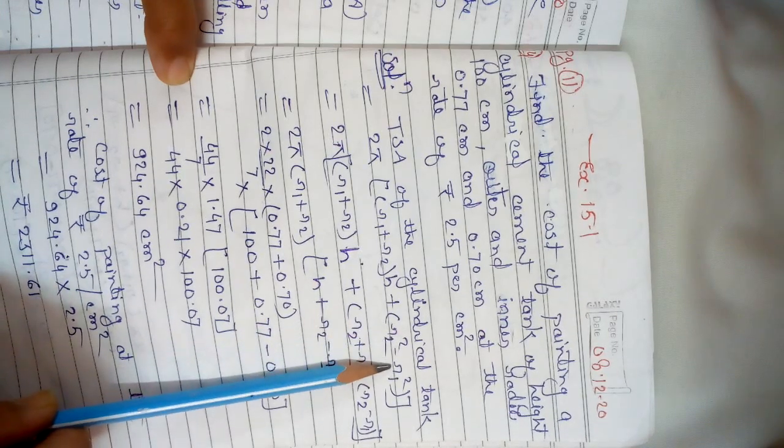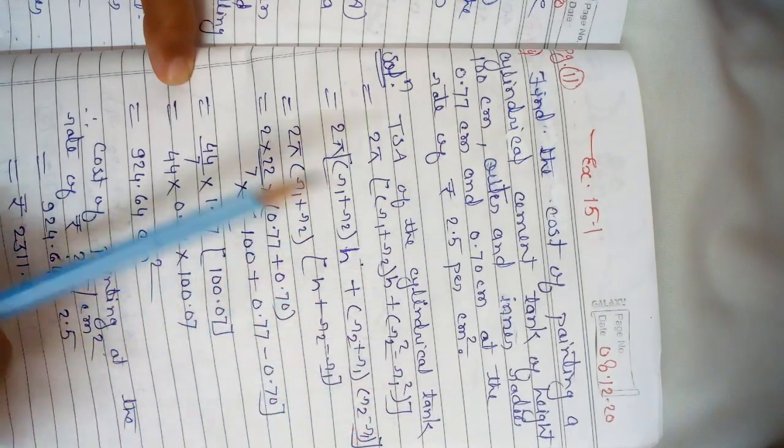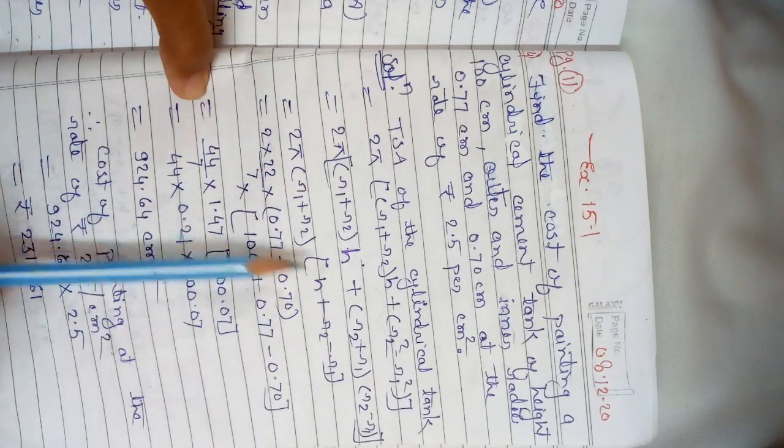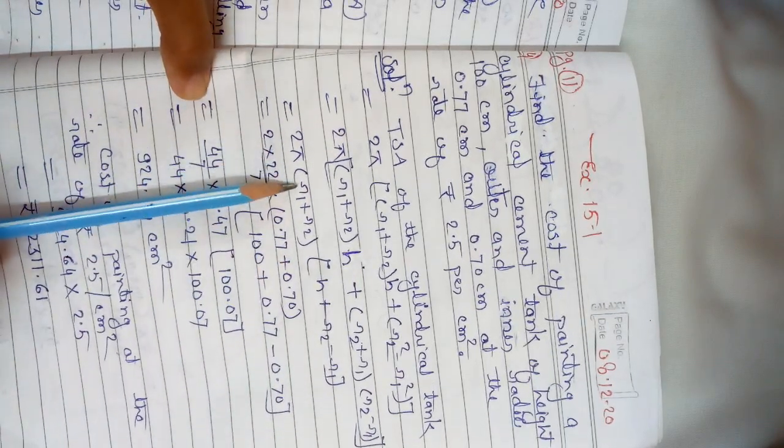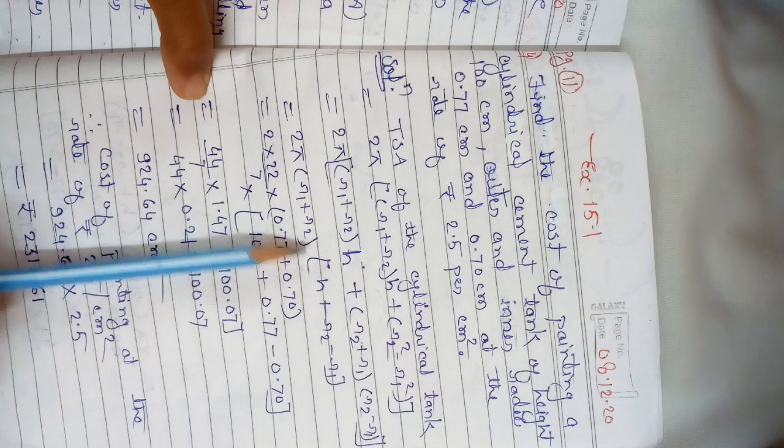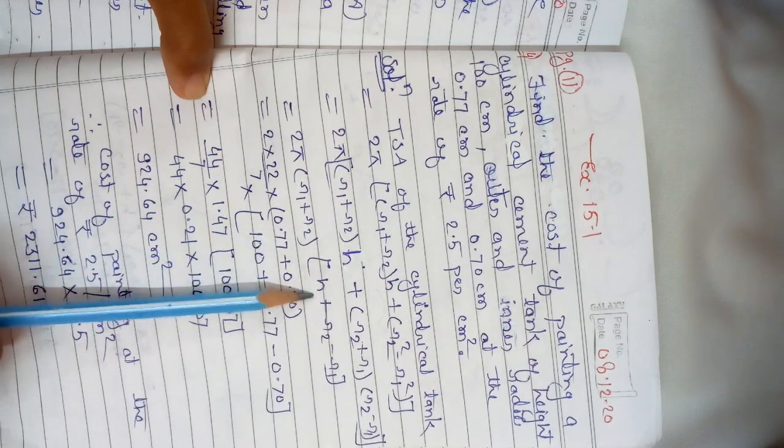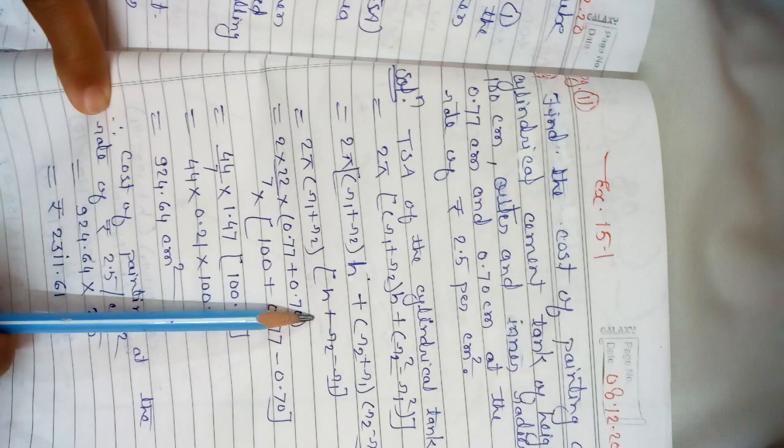By solving this formula we can also write 2π(R1 + R2)(H + R2 - R1). By substituting all the values we get 2 × 22/7 × (0.77 + 0.70) × (100 + 0.77 - 0.70).